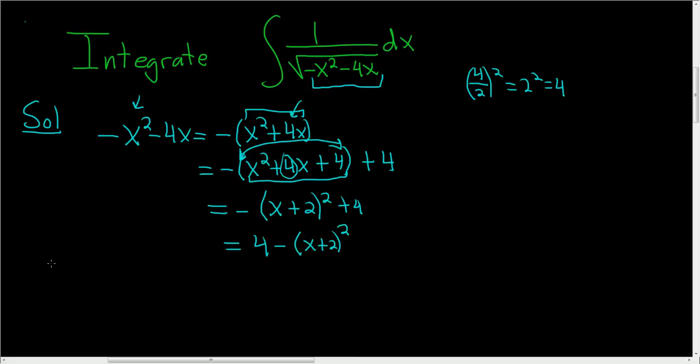So now to finish we'll rewrite our integral. This is 1 over the square root of 4 minus (x plus 2) squared dx.